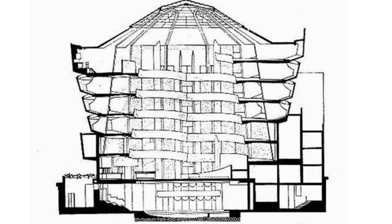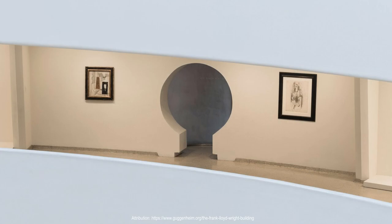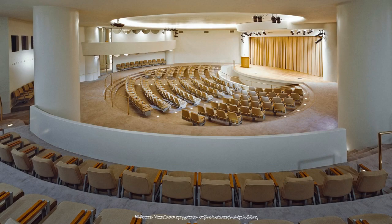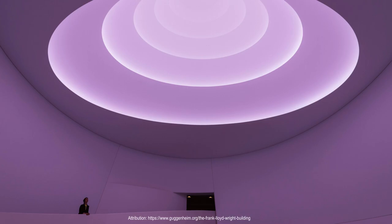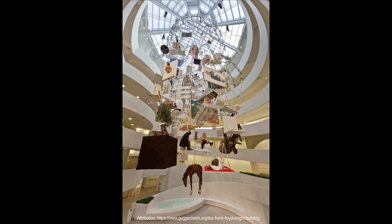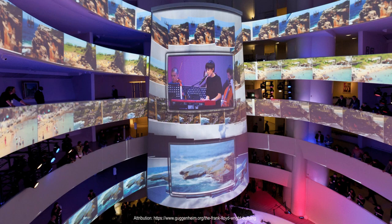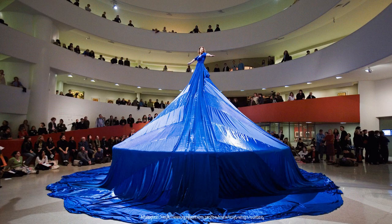These levels also feature smaller, more intimate galleries, as well as a theater and other spaces used for educational programs and public events. As visitors reach the top of the ramp, they will find themselves in the museum's magnificent Rotunda, which is surrounded by a series of skylights that provide natural light to the galleries below. The Rotunda offers visitors a stunning view of the surrounding city and provides a sense of grandeur and majesty that is fitting for a world-renowned museum.